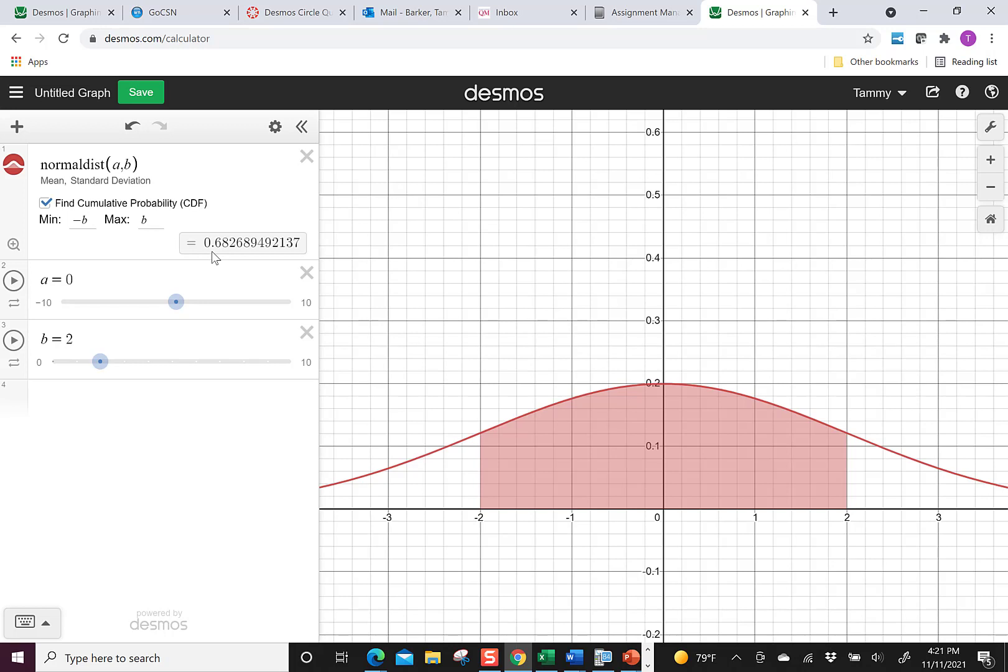So changing the standard deviation doesn't change the percent of the data close to the mean, but it does change how far away it is. So watch if I change it to three, it got flatter, four, it gets flatter, five, it gets flatter.